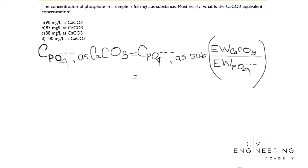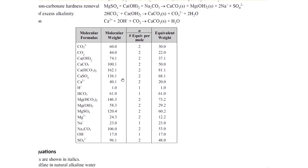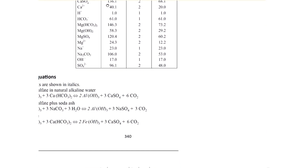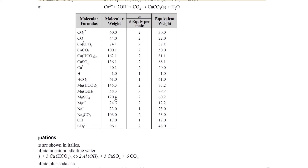Here is our table for molecular formulas and equivalent weights from the environmental engineering chapter, page 340. We need the equivalent weight of calcium carbonate — here it is: 50. We also need the equivalent weight of phosphate ion, but phosphate ion is not available in this table, so we have to calculate the equivalent weight for phosphate ion.